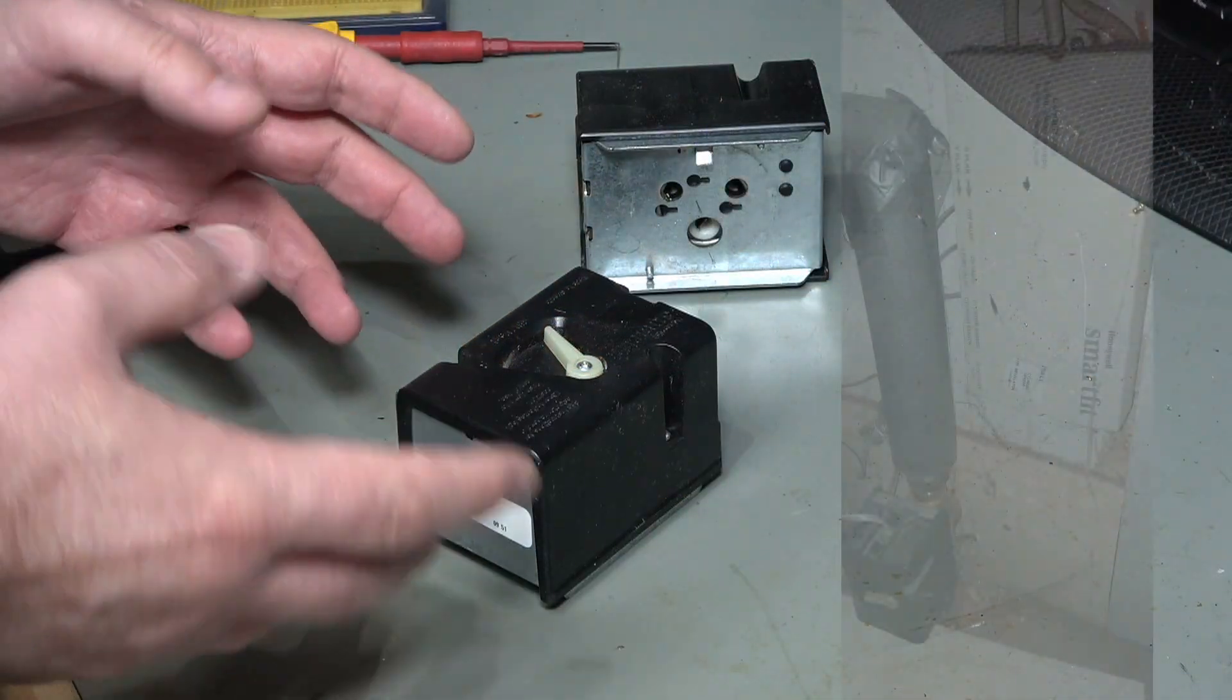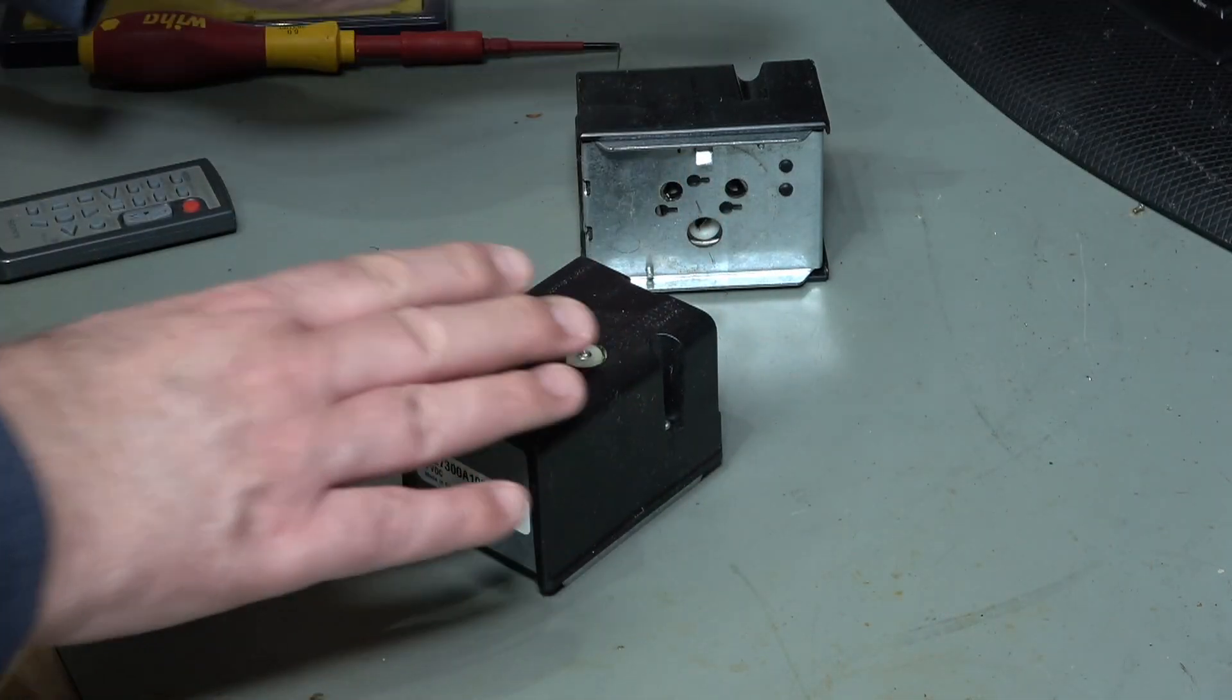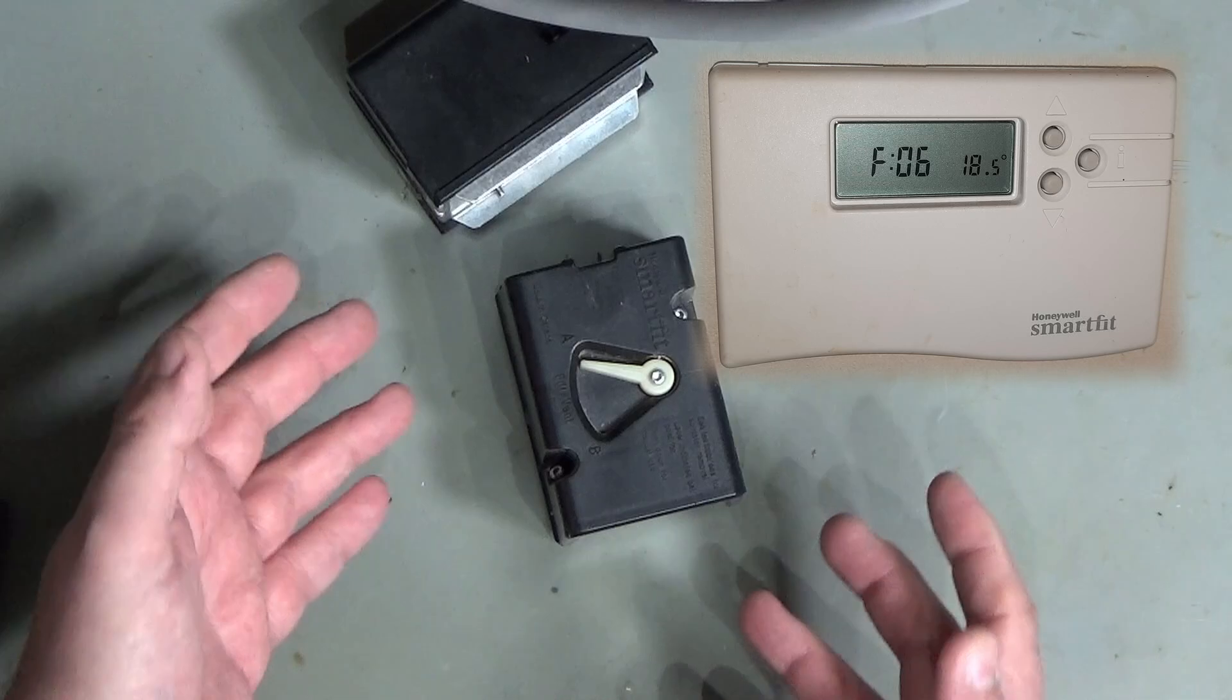Hi, welcome to Make or Repair. I previously did a video on these actuators. They go on motorized valves for central heating, one for central heating and the other for hot water, and they'd come up with fault F06, which basically means short circuit.